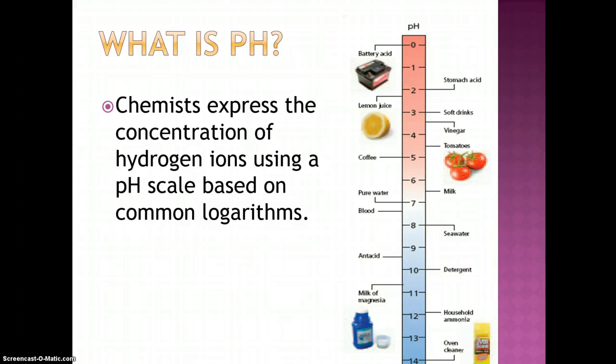The pH scale ranges from 0 to 14. Any pH less than 7 is considered acidic, pH greater than 7 is basic, and a pH equal to 7 is considered neutral.